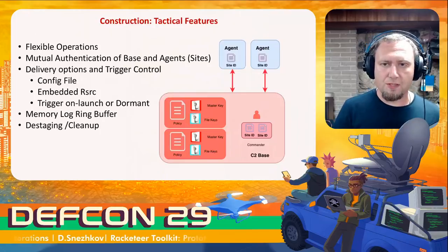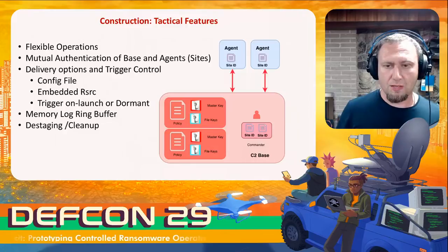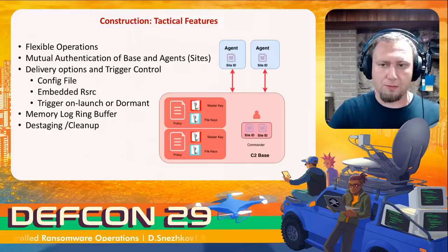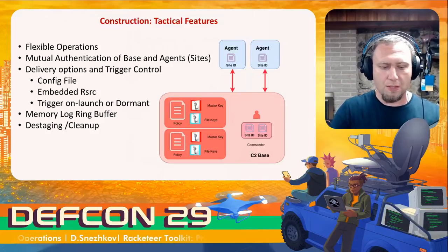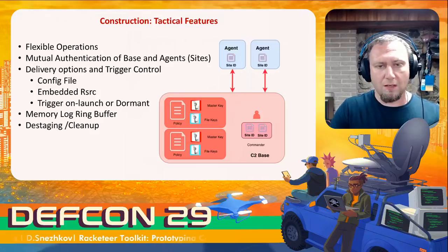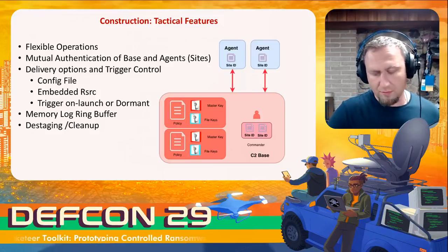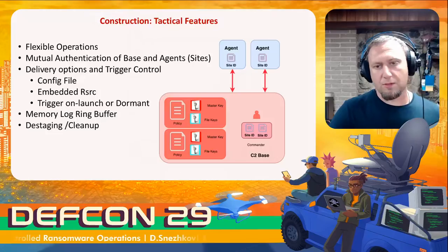That plays to flexible operations. We also want mutual authentication between the C2 or commander and the agent, so the agent knows who its C2 is at the time of deployment. The C2 should only accept agents it knows about. Sometimes you hard-code the policy into the agent to operate on an air-gap network without C2 interaction, encrypting immediately after drop. Or you can go the dormant route and wait until activated.